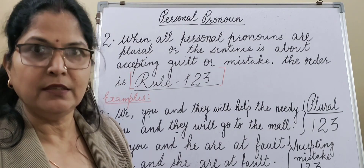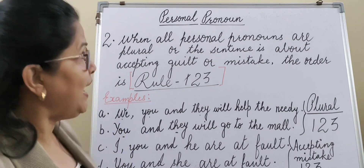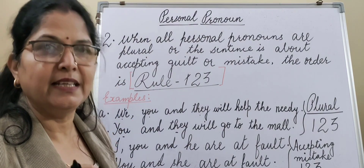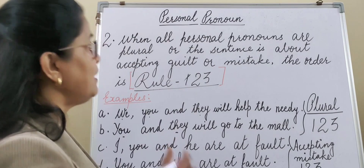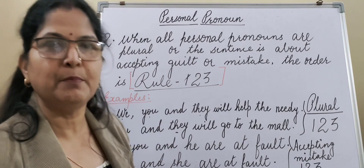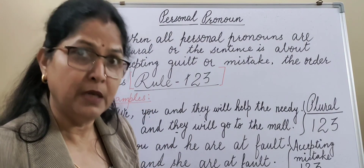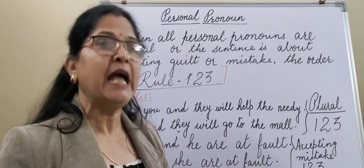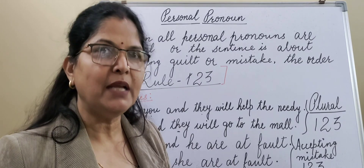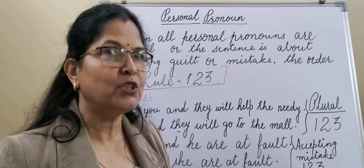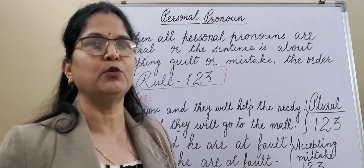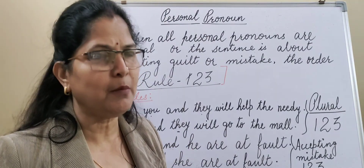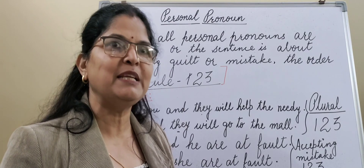So whenever we connect three singular personal pronouns together, Rule 231 will be used. And when personal pronouns are all plural, or when in the sentence we are accepting our guilt, our fault, our weaknesses, Rule 123 will be followed. I hope Rule 231 and Rule 123 are both very clear. If you have any doubt related to this video or previous videos, please write in the comment section. Bye-bye, let's meet in the next session.